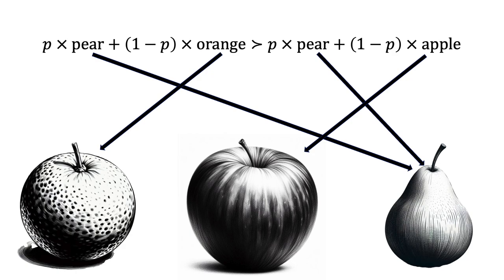The independence axiom is specific to lotteries. The logic behind this specificity is that the outcomes of a lottery are never realised together — they can be treated as independent. In my illustration involving apples, oranges and pears, there is no outcome where the agent receives more than a single piece of fruit. They will receive an apple, an orange, or a pear — they will not receive a mix of fruit.